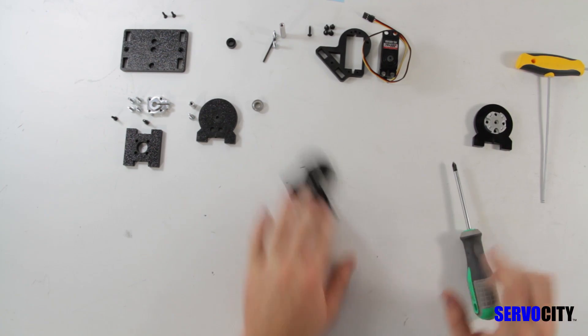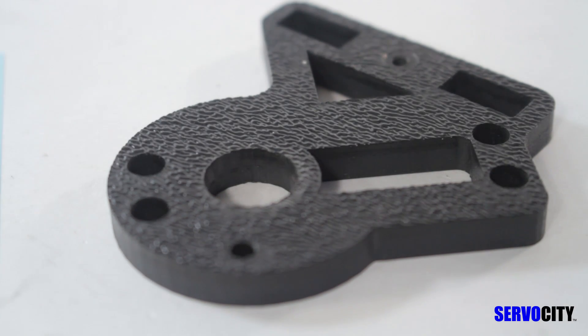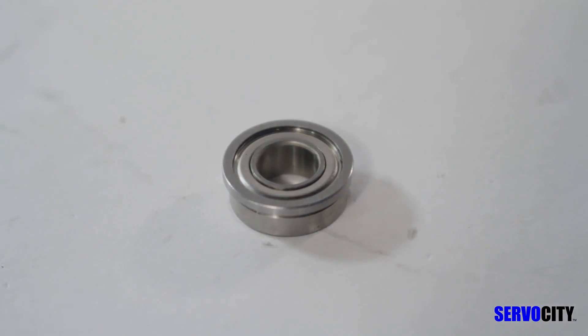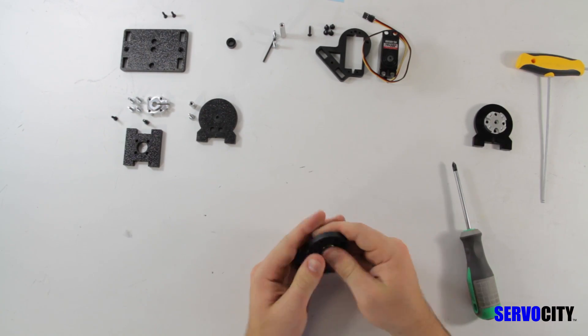Next, grab this ABS plate as well as the quarter inch bore flange ball bearing. You will press the ball bearing into the textured side of the ABS plate.